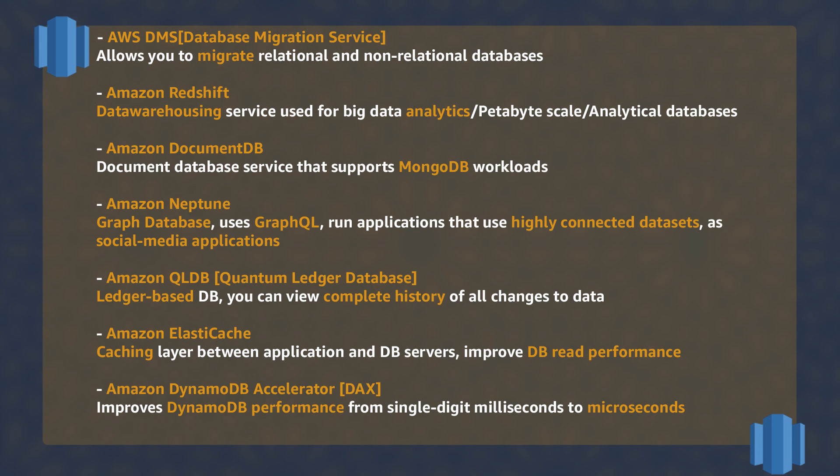ElastiCache is a caching layer inserted in front of your database to improve read performance, and it can be used with any database engine. DynamoDB Accelerator is a solution only for DynamoDB to improve read performance to be in the range of microseconds.